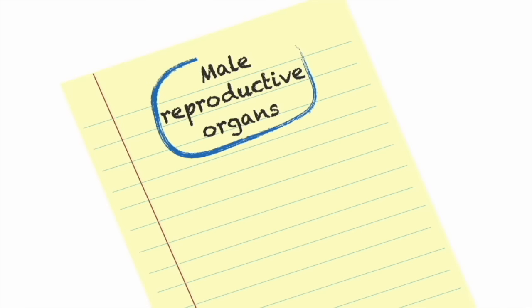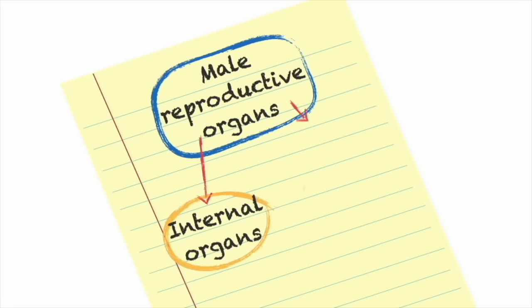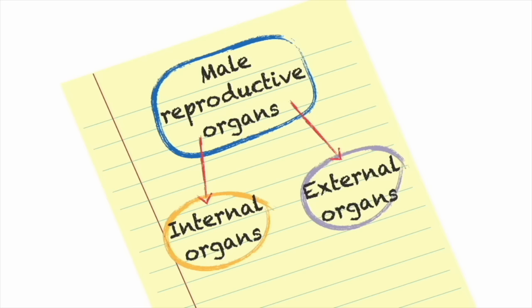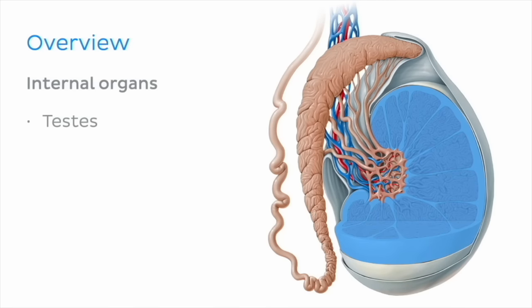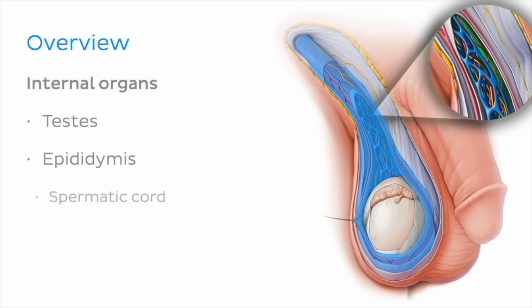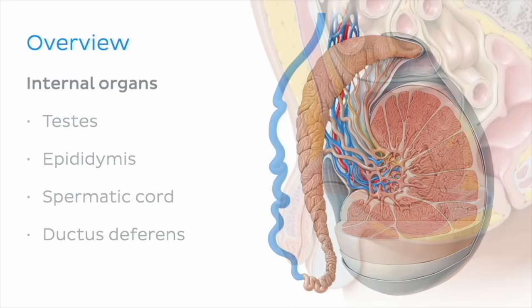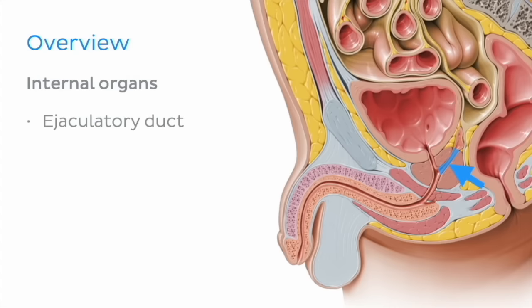The male reproductive organs can be divided into internal and external organs. We're going to explore each of these groups individually, but first, let's just get a sneak preview. Starting with the internal organs, this group consists of the testes, epididymis, spermatic cord, ductus deferens, and ejaculatory duct.